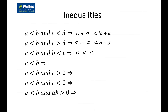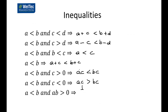If a is less than b and b is less than c, then a must be less than c. If a is less than b, then adding the same number c to each gives a plus c is less than b plus c. If a is less than b and c is positive, then a times c is less than b times c. If a is less than b and c is negative, then ac is greater than bc. And if a is less than b and a times b is positive, then one over a is greater than one over b.